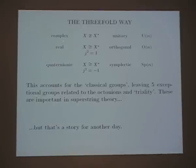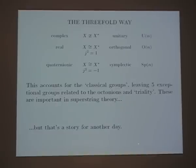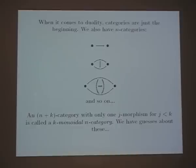The threefold way says there are these choices — complex, real, and quaternionic — and Hilbert spaces of each type have characteristic symmetry groups. Complex Hilbert spaces have the unitary group; demanding a real structure gives the orthogonal group; demanding a quaternionic structure gives the symplectic group. These are the so-called classical groups, accounting for most of the classification of simple Lie groups. There are just five exceptional groups related to something more sophisticated called triality, which is associated to the octonions.